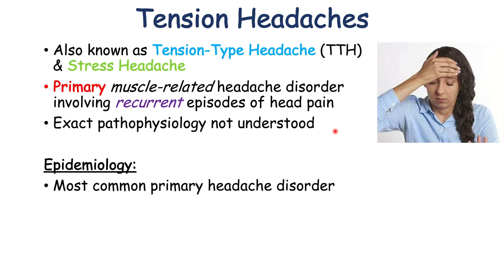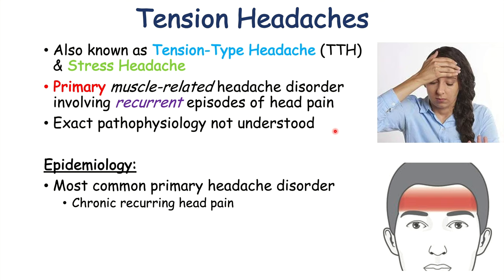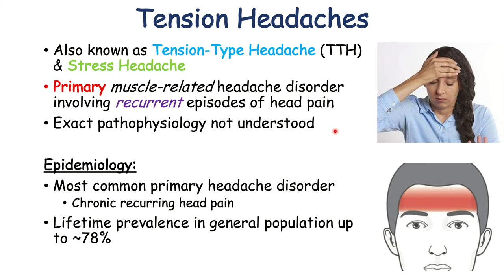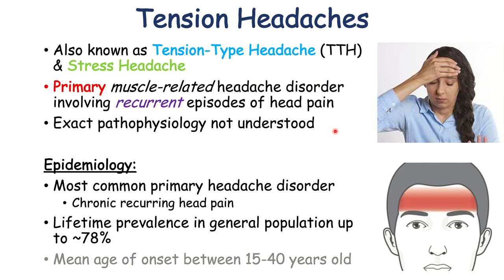Tension headaches are very common. They are actually the most common primary headache disorder and the most common cause of chronic recurring head pain. They are so common that the lifetime prevalence in the general population is upwards of 78 percent. The mean age of onset is between 15 to 40 years old.